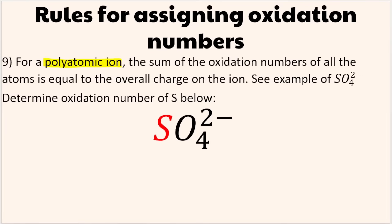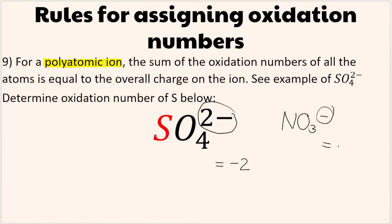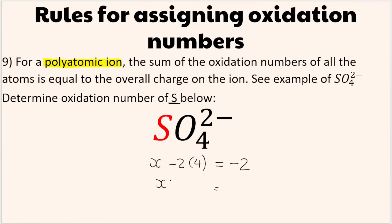Rule 9: for a polyatomic ion, the oxidation numbers add up to the charge of the ion, not zero. For example, in SO₄²⁻ the charge is -2, so the oxidation numbers must sum to -2. Oxygen is -2 and there are 4 oxygens: -2 × 4 = -8. Setting up: x + (-8) = -2, so x = +6. The oxidation number of sulfur in SO₄²⁻ is +6.